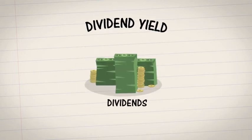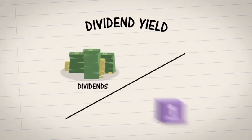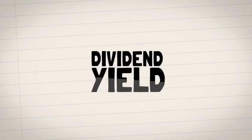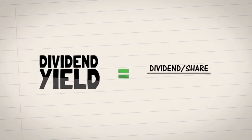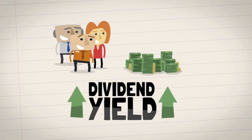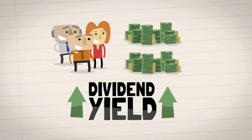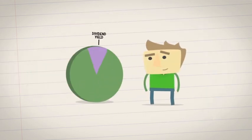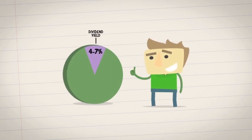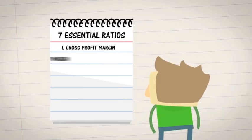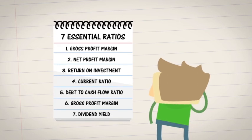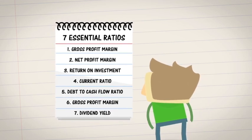Finally, the seventh essential ratio is the dividend yield. This measures how much in dividends the company pays out compared to their stock price. To calculate the dividend yield, take the dividend per share and divide it by share price. The higher the yield, the more dividends shareholders receive. Look for companies with consistent yields between 4% and 7%. By applying these seven essential ratios, you too can uncover hidden gems in the stock market.